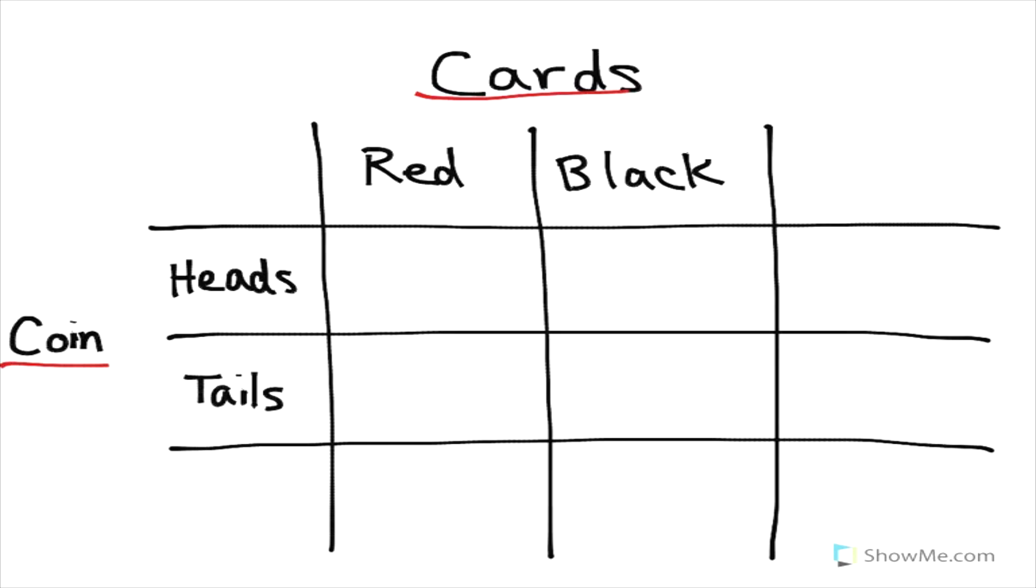If we have a deck of cards there is a chance of one half that we draw a red card, a chance of one half that we draw a black card. Same thing with the coin. If it's a balanced coin there's a chance of one half that it lands heads, chance of one half that it lands tails. All of these probabilities in the middle are one-fourth because you get that by multiplying one half times one half for each of these.